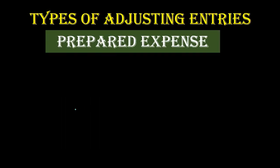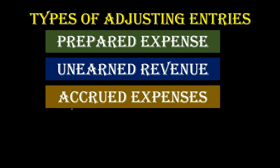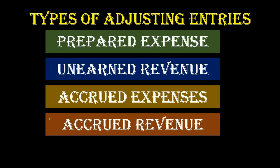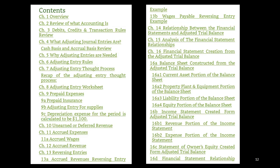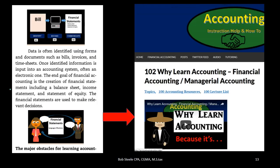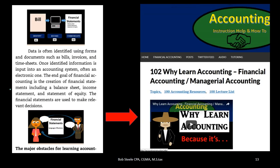The types of adjusting journal entries include prepaid expense, unearned revenue, accrued expenses, and accrued revenue. If this has been helpful and you want to know more about the adjusting process, we suggest taking a look at accounting instruction reference number 300. One of the principal advantages is that it lists topics in a logical order so you can find what you're looking for and be guided to free resources including instructional videos, more reading, games, and test banks. It also has links to make navigation easy.